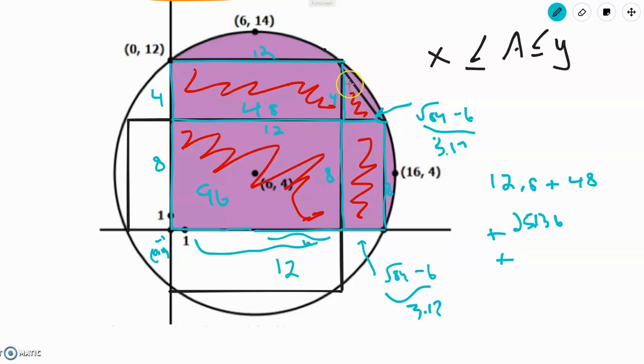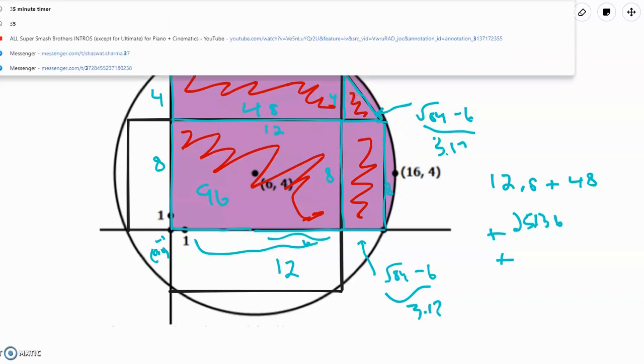And then we can add the area of this triangle, which is BH over 2. And this is square root of 84 minus 6 times 4 over 2, which is about 3.17 times 2, which is about 6.34.